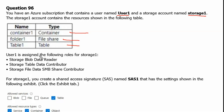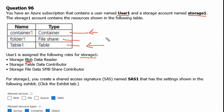User1 is assigned the following roles for storage1: the Storage Blob Data Reader role, which is applicable on container1; the Storage Table Data Contributor role, which is applicable on table1; and Storage File Data SMB Share Contributor, which is applicable on the file share.